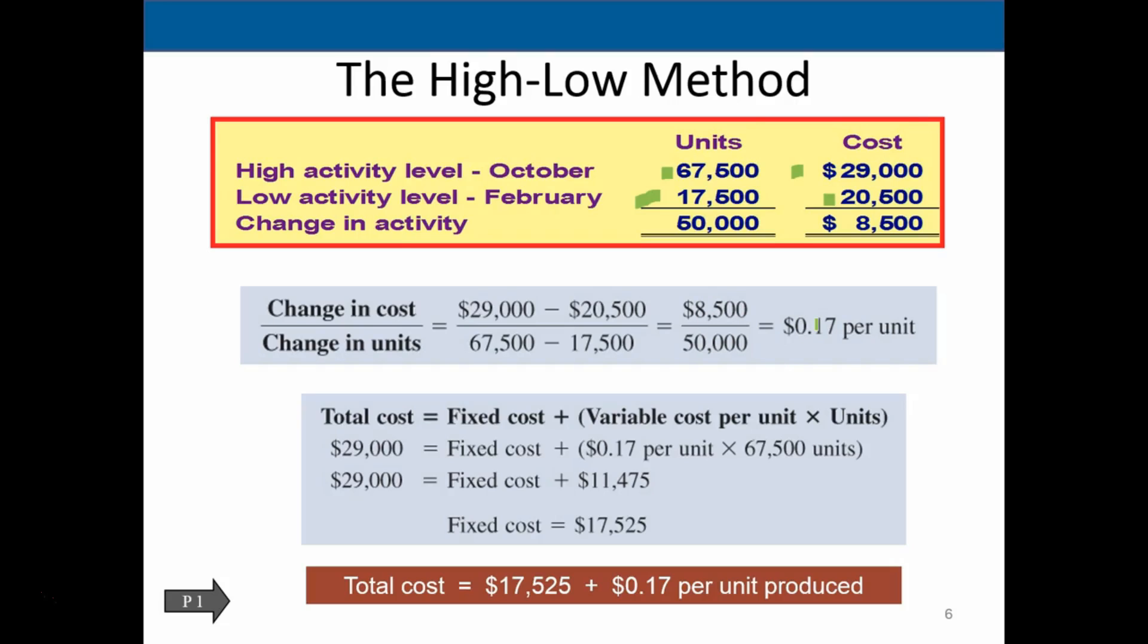What we don't know at this point is the fixed portion of the line. And if we look at this equation, then we know that the total cost of anything, assuming there's only two components to it, a fixed portion and a variable portion, is the fixed portion and the variable portion. And what do we know about the variable portion? It goes up per unit. So we know we've got the variable cost per unit times the number of units.